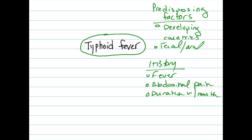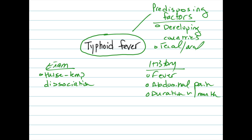One characteristic finding on exam is pulsed temperature, or sphygmothermal dissociation, which describes the phenomenon of maintaining a normal and often bradycardic pulse despite very high fevers. We often expect the pulse to rise about 10 beats per minute for every 1 degree Celsius rise in temperature, which is not seen often in this disease.